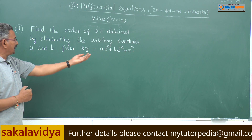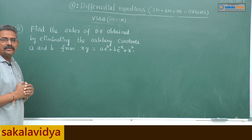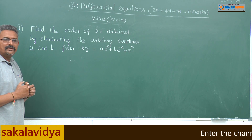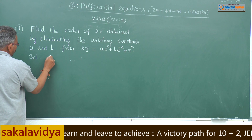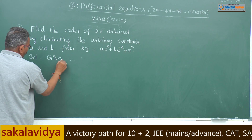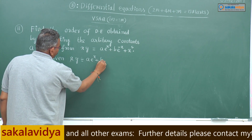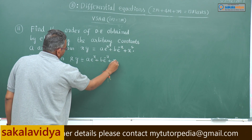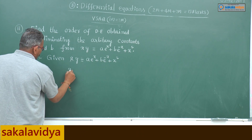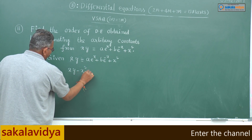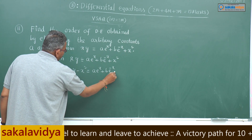We bring x² to the left-hand side, so the equation becomes xy - x² = ae^x + be^(-x). Call this equation 1. Since there are two arbitrary constants, we differentiate two times to eliminate them.